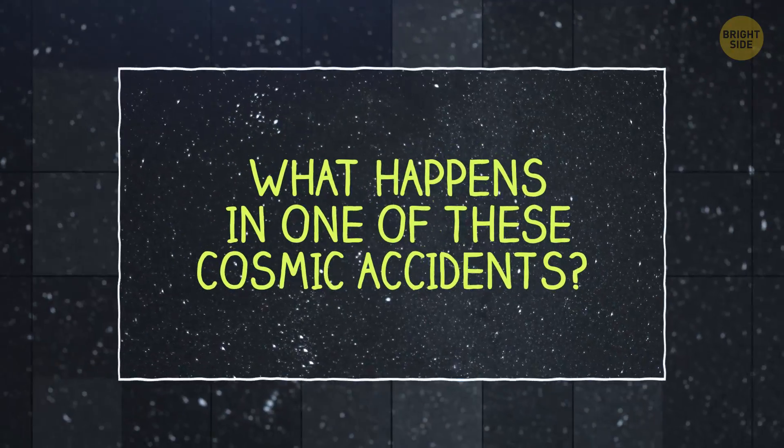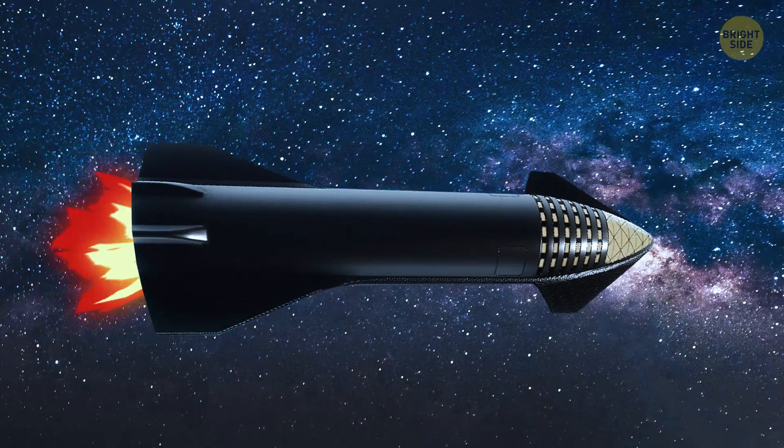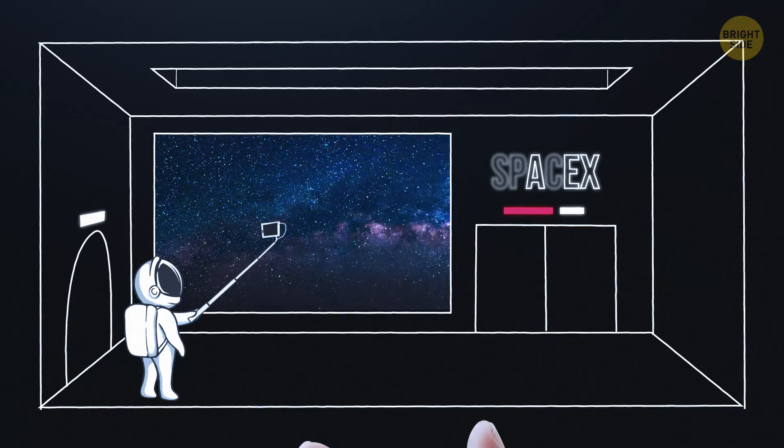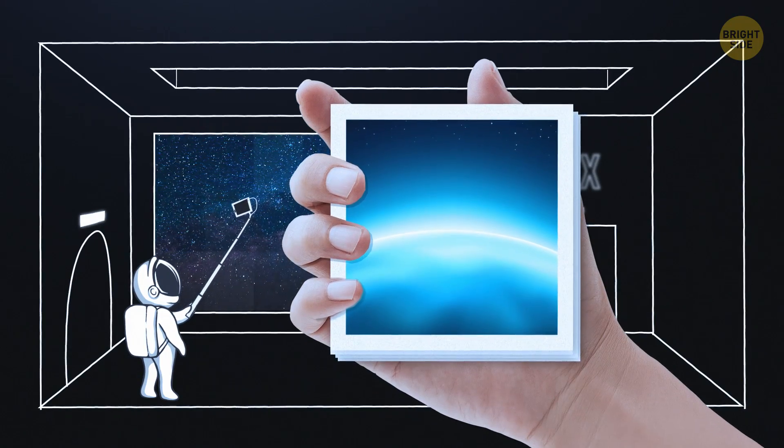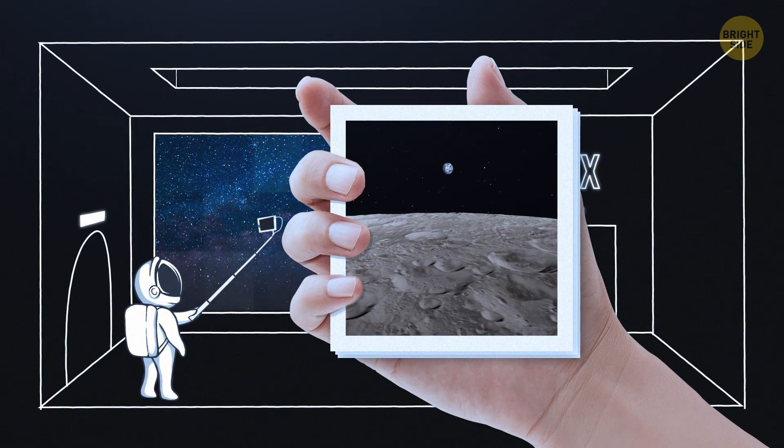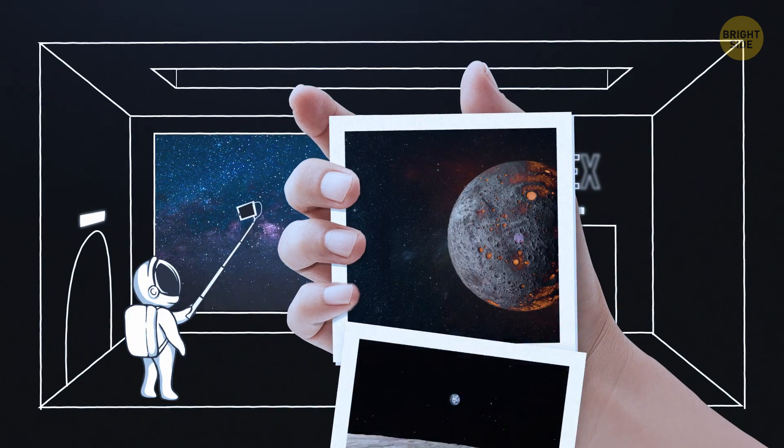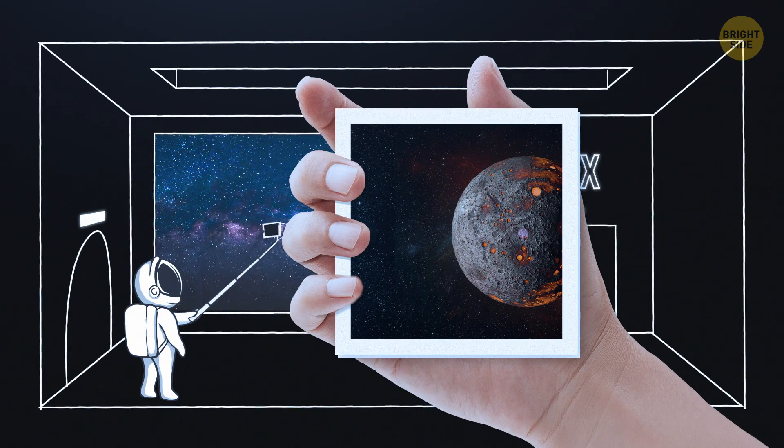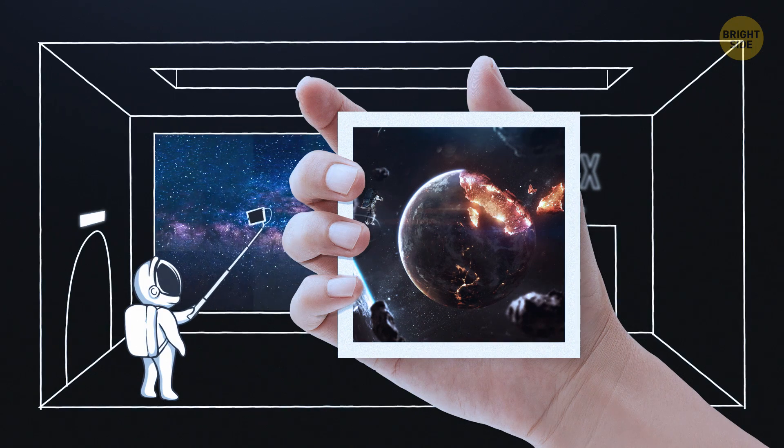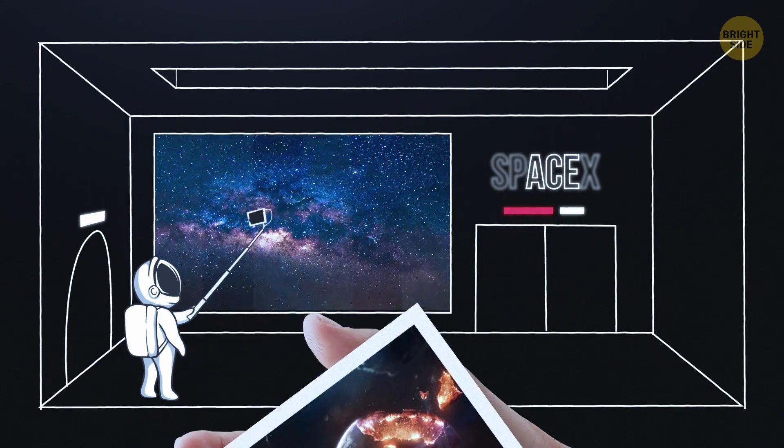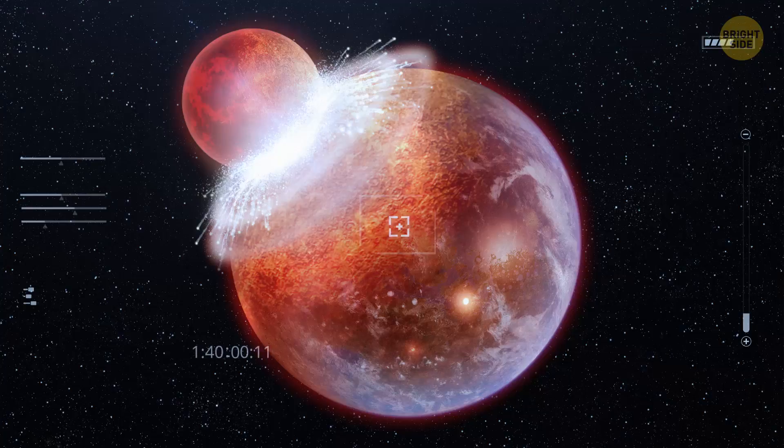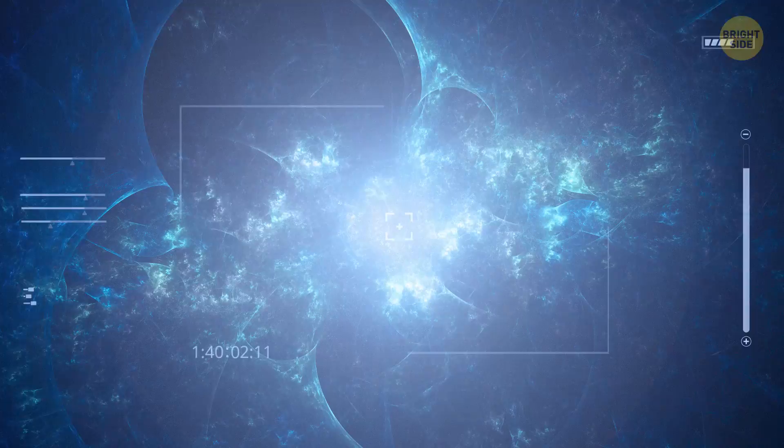What happens in one of these cosmic accidents? Lots of different things can take place, ranging from the weird to the disastrous. A planet might lose its atmosphere and pressure. Its entire surface can be completely stripped away, along with all the rocky materials inside of it. If a small planet is hit by a larger one, it can instantly lose all of its gravitational pull. In the worst-case scenario, both planets may disintegrate completely. But if one survives, the collision can change the entire nature of a star system.